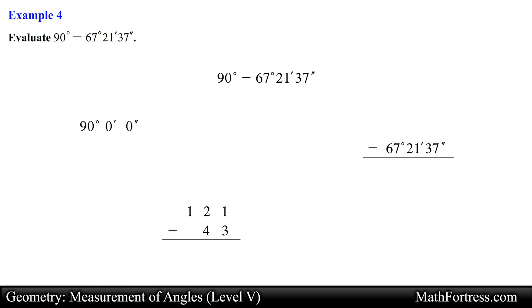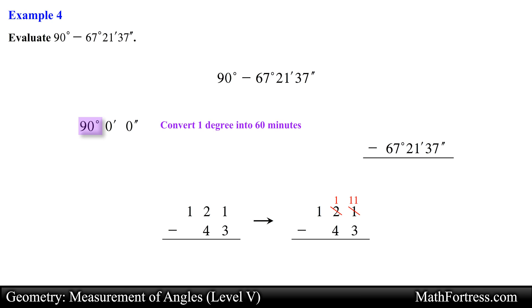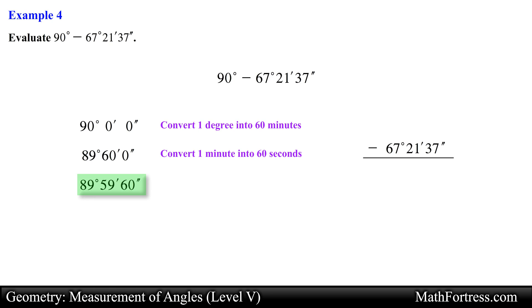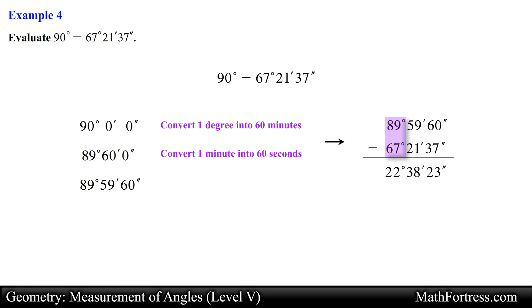Similar to borrowing when subtracting real numbers, we borrow from the degrees place and convert 1 degree into 60 minutes, and also convert 1 minute into 60 seconds when needed. We first borrow a degree and convert it into 60 minutes, reducing the degrees place to 89 and changing the minutes place to 60. Then we borrow a minute and convert it into 60 seconds, reducing the minutes to 59 and changing the seconds to 60. We then subtract seconds, minutes, and degrees to get 22 degrees 38 minutes 23 seconds as our final answer.